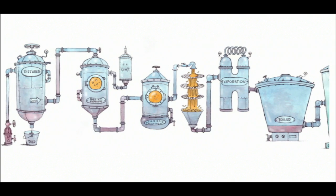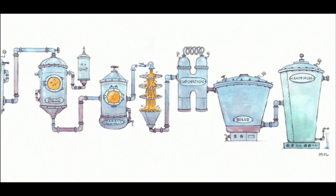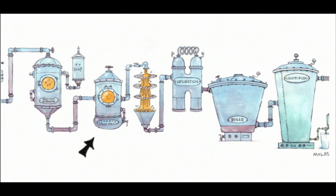After the calcium carbonate is filtered out, the juice is treated with activated carbon, charcoal, or decoloring ion exchangers to remove the color from the liquid.